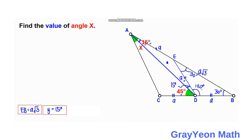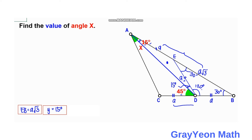Next, we find the value of AC, which is opposite the 30-degree angle at B. The two known sides are AB, which is A plus A times the square root of 3, and BC, which is 2A. We have two sides and an included angle, so we apply the cosine law to find AC.